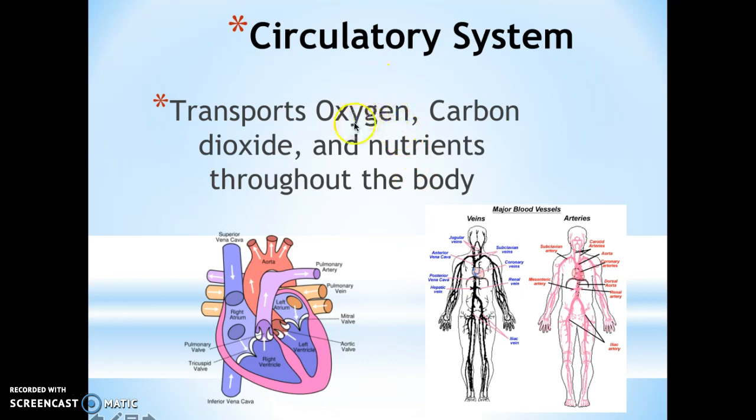The first body system we're going to talk about is the circulatory system, and the main purpose of the circulatory system is to transport oxygen, carbon dioxide, and nutrients throughout the body. This is basically what I want you to write under the function of this body system. How does it work? Well, basically, the way that it works is by pumping blood, and the pumping here is what we call the heart — you probably already knew this.